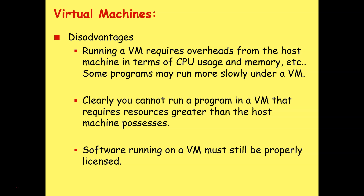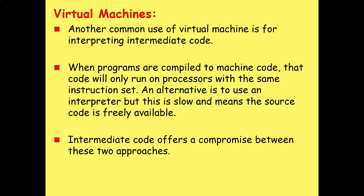Some programs may run more slowly under a virtual machine because they have less physical resources available. You cannot run a program in a virtual machine that requires resources greater than the host machine possesses — you only have a limited amount of memory, CPU speed, and graphics card capability. You can't exceed that through virtual machine software. And of course, software running on a VM must still be properly licensed. If you're running lots of copies of Windows or Microsoft Office on virtual machines in a big business, you still have to pay for them.